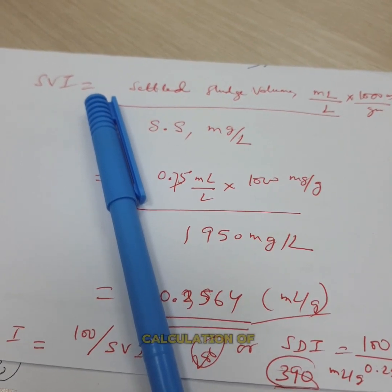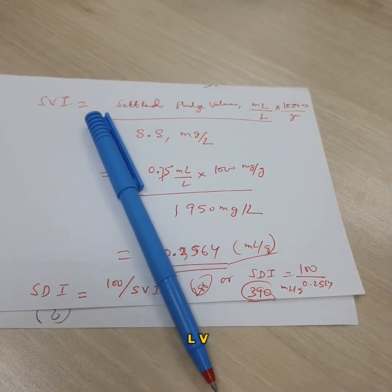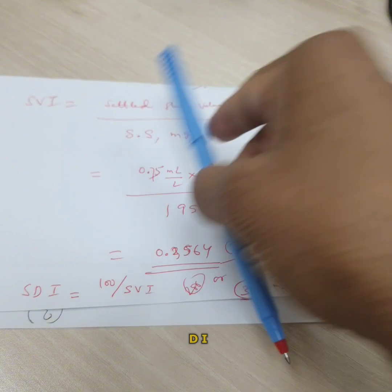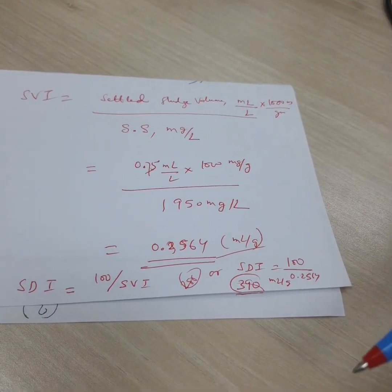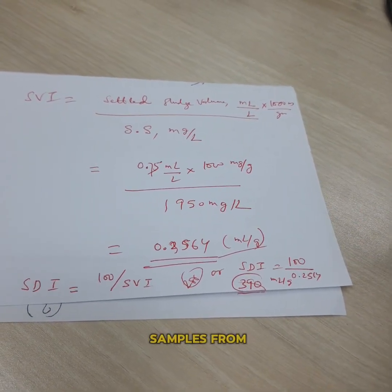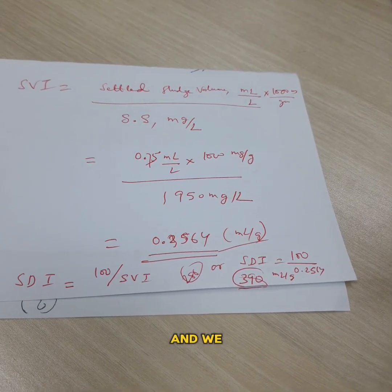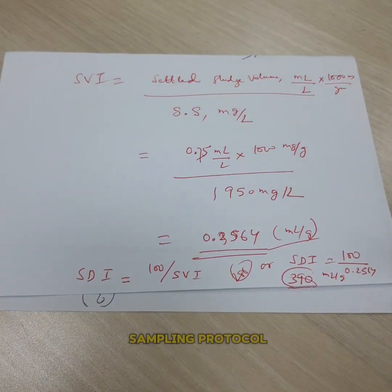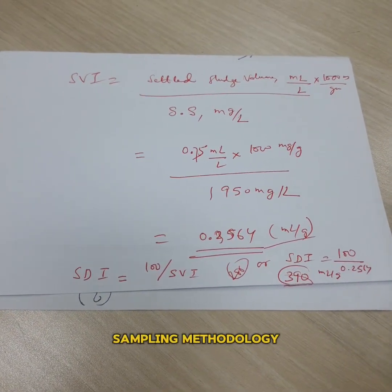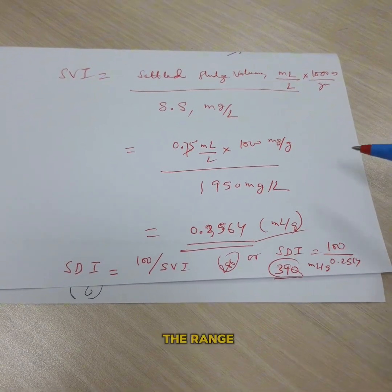That's all about the calculation of MLSS and MLVSS, SVI, SDI. In order to increase the accuracy, we should take more samples from the same point and we should also check our sampling protocol, sampling methodology, so that our results are in the range.